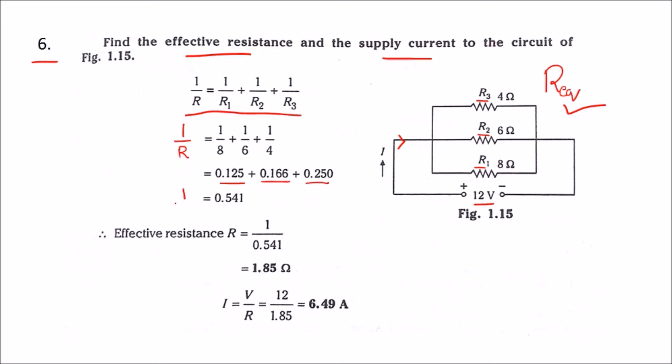Therefore, 1 by R is equal to 0.541. Therefore, the total resistance, R, is equal to 1.85 ohms. This is the equivalent resistance, R eq.